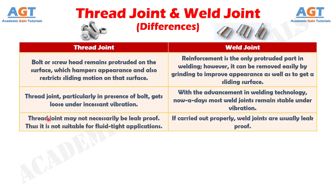Number 7: thread joint may not necessarily be leak proof, thus it is not suitable for fluid tight applications. Whereas, if carried out properly, weld joints are usually leak proof.